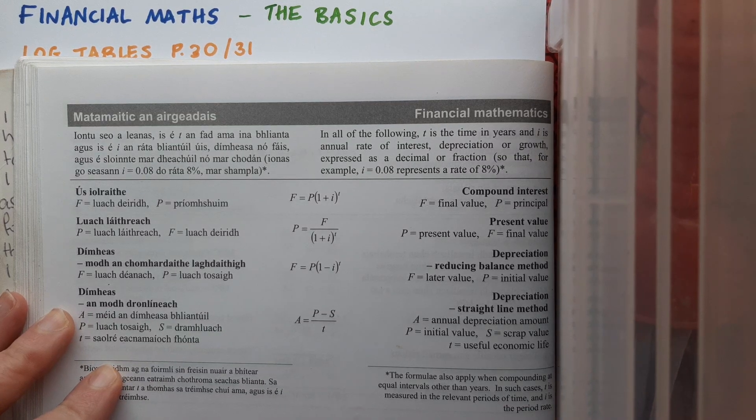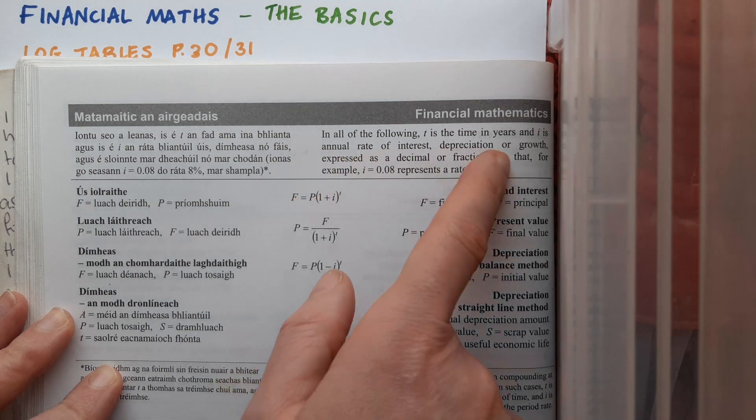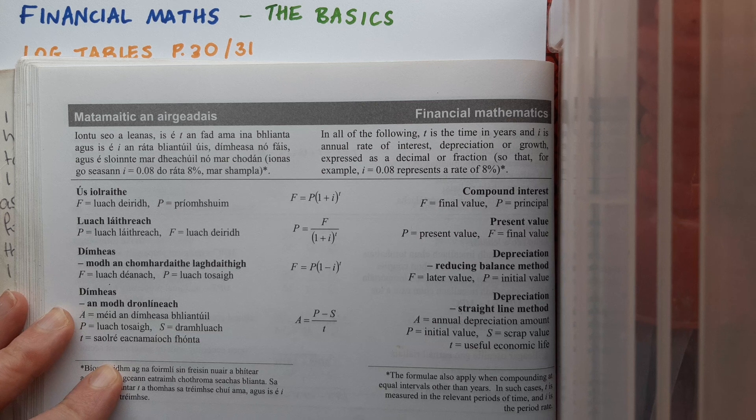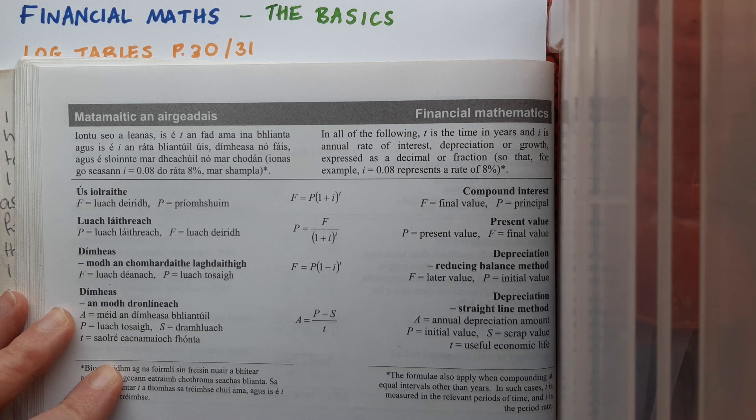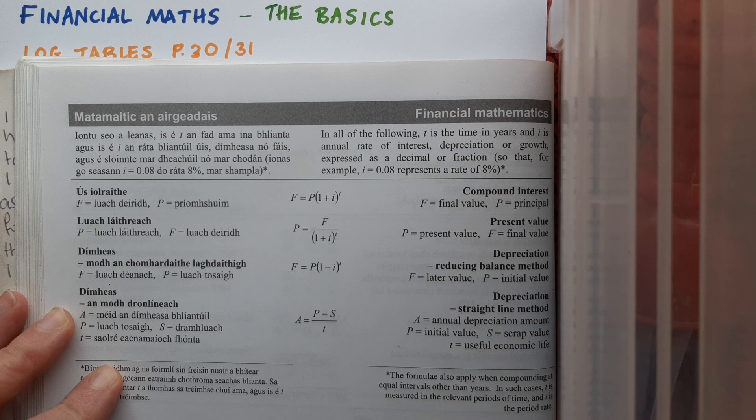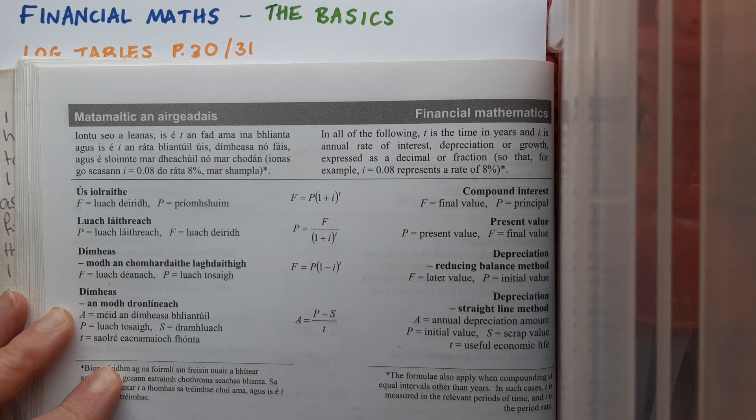Here we have page 30 and just to note a few pieces of information that we need to be aware of. At the very top here it says that in all of the following t is in years and i is the annual rate of interest, depreciation, or growth expressed as a decimal. For example, i equals 0.08 represents a rate of 8%. So whenever we're given a percentage we're going to change it to a decimal straight away.